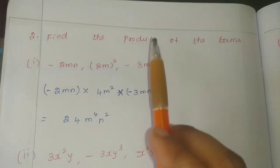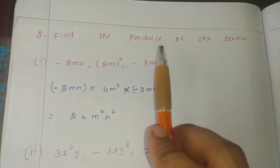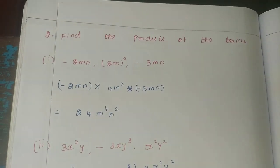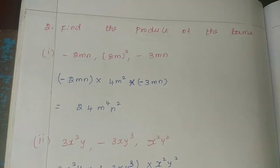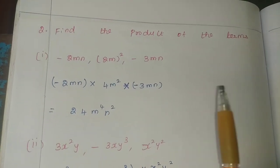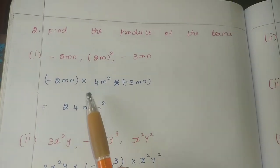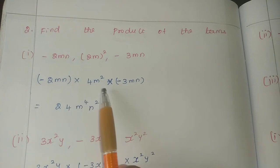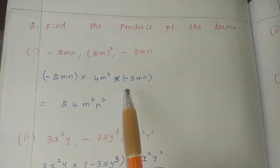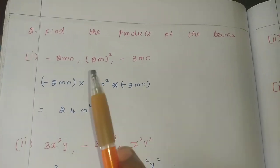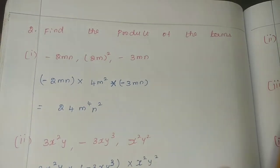We are going to do the product. Product means multiplication. In this chapter, we are going to do everything very easy. But even a minute mistake is wrong. We are going to talk about symbols and product numbers.